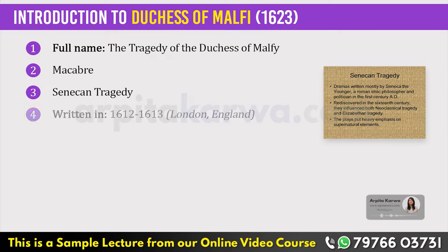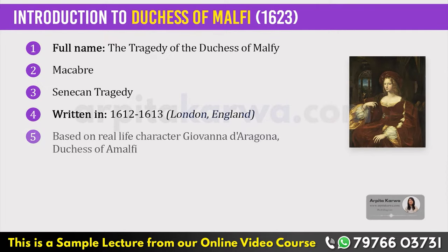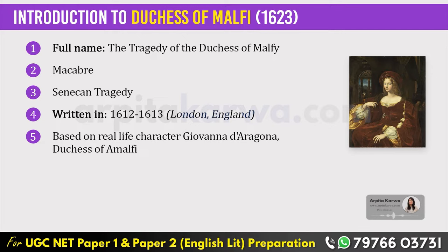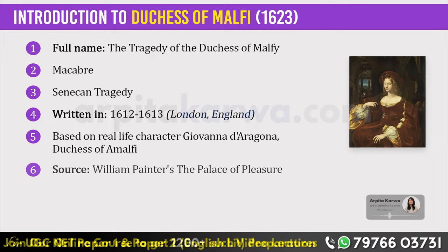The play is set in Italy, Rome and Milan. It is loosely based on events that occurred between about 1508 and 1513. The Duchess was Giovanna di Araguana, Duchess of Amalfi. Webster's principal source was William Painter's The Palace of Pleasure.